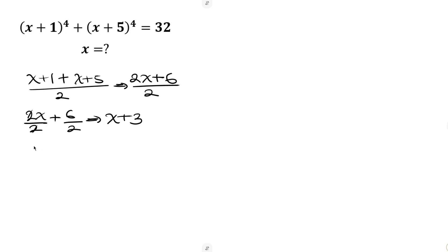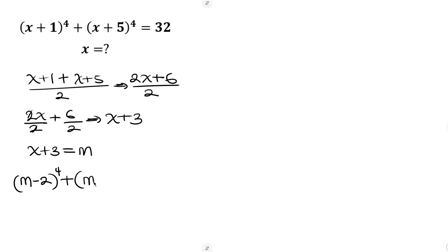Let's call this middle number x plus 3 as m. Now let's rewrite our given question but this time in terms of m. Since m is x plus 3, to get x plus 1 I subtract 2, giving (m minus 2). And to get x plus 5 I add 2, giving (m plus 2). So the equation becomes (m minus 2)^4 times (m plus 2)^4, and this is equal to 32.